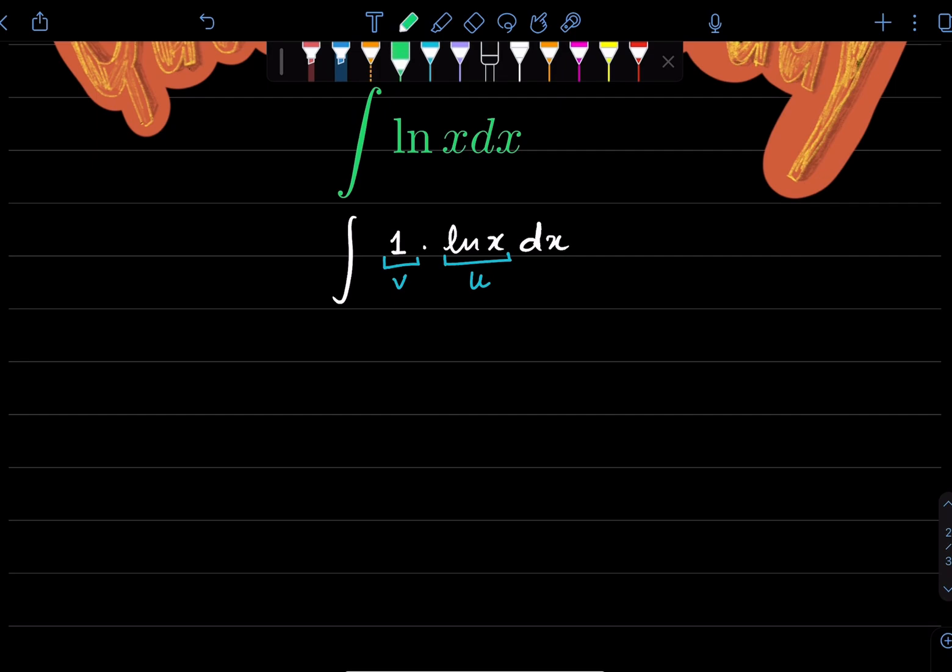So we're going to first find differentiation of u, which is ln x would be differentiated to 1 upon x times 1. That would be 1 over x.